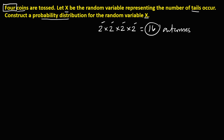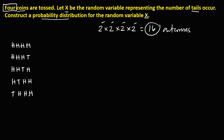Then we need to list the sample space or the possible outcomes. So for 4 coins, you can have 4 heads, or head, head, head, and one tail. Then also head, head, tail, and head. Or head, tail, head, and head. Also you can have tail, head, head, and head.